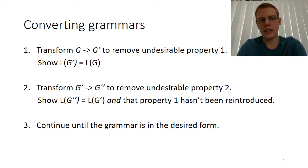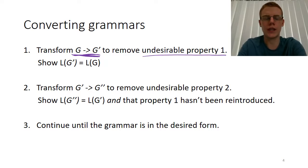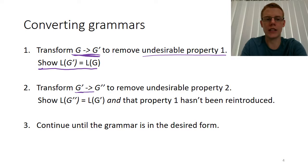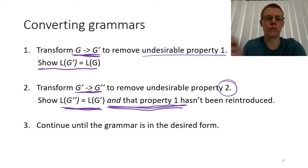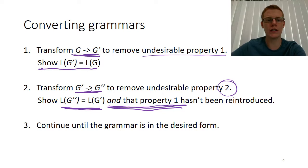The basic idea is that we take a grammar and transform it into a different grammar to get rid of some unwanted property, and we show that the transformation gives us a grammar that produces the exact same language. We then transform that second grammar into a third grammar, removing another undesirable property, again verifying the language is the same and that previously removed properties are not reintroduced. By continuing this process, we pipe our grammar through a series of methods to remove all undesirable properties.